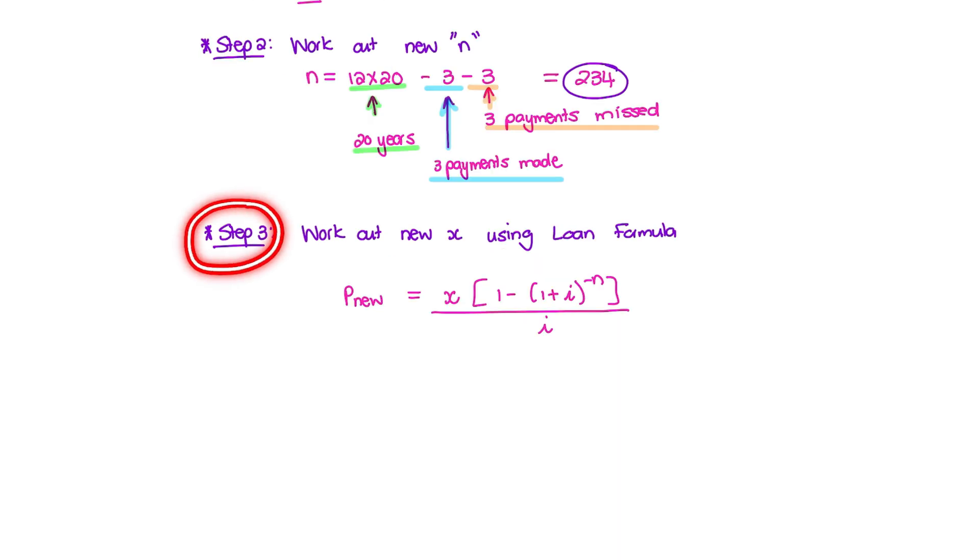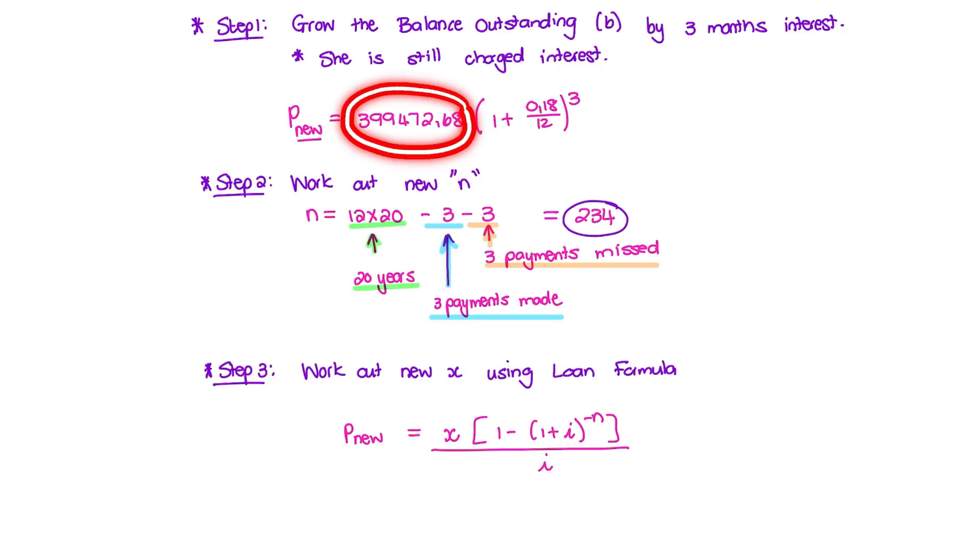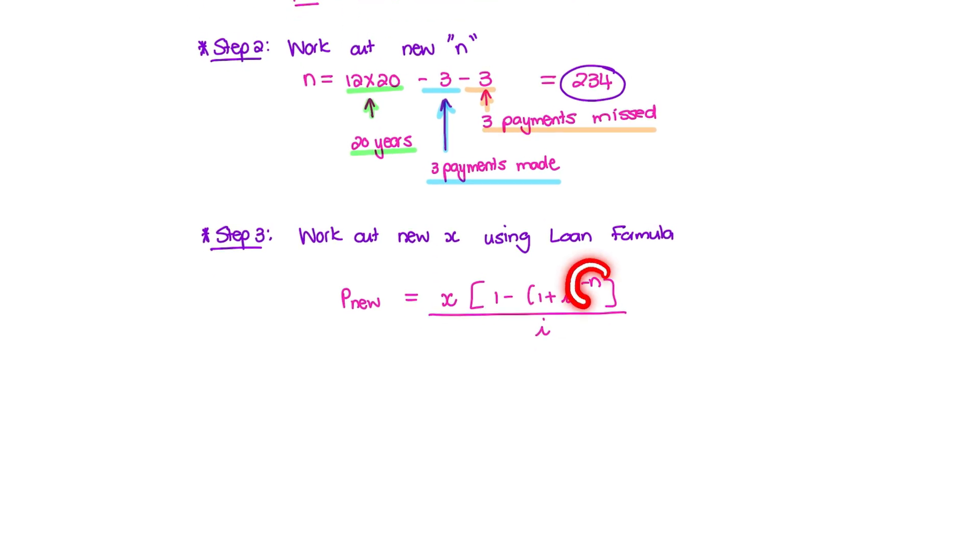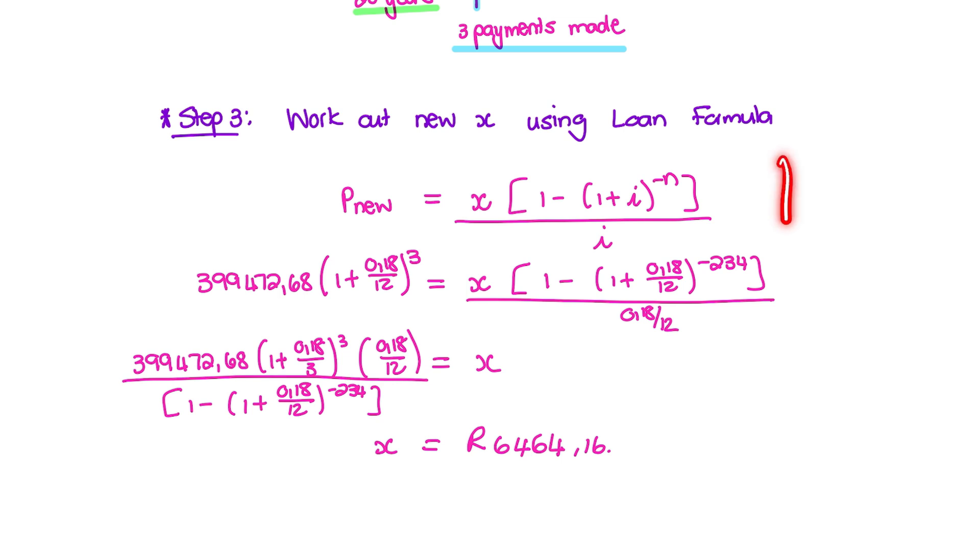And then our third step is we want to work out a new X using the loan formula. So remember, we have a new loan value now. That's the balance outstanding. And we charged ourselves with three months of interest. So that's P new. We want to find X and we know that N is 234. The I has stayed the same and it did not change over this period. So when I plug in all of that information, it does look a little bit overwhelming, but let's move through it step by step. The new loan formula is the balance outstanding with the three months that we are charging ourselves. And we have N as minus 234. The I has not changed.